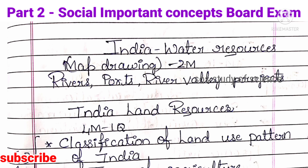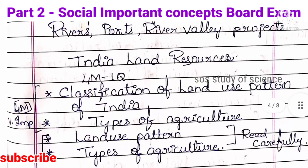Moving to India Land Resources. Here you can expect one 4-mark question — very important. You have to practice the classification of land use pattern of India, types of agriculture, and land use patterns. Both land use patterns and types of agriculture are very very important. Read carefully — you can expect a 4-mark question on these topics.